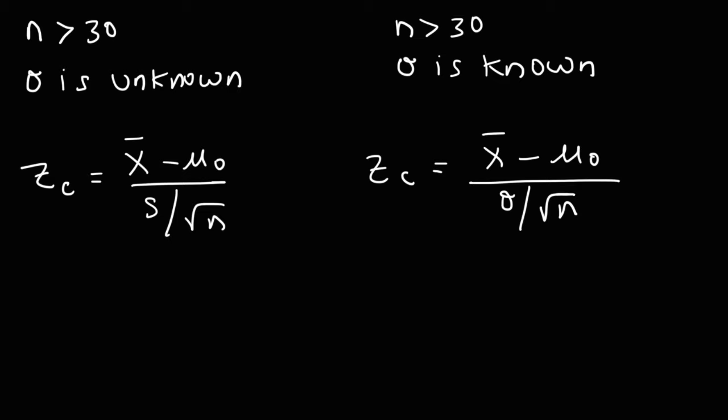So those are the formulas we can use to calculate the Z value or T value and compare it to the critical value, in order to determine whether we should reject the null hypothesis or not. This is when you're dealing with the population mean.